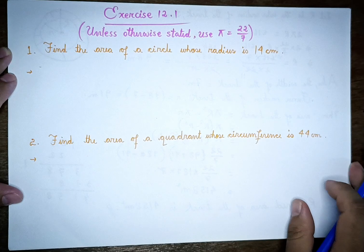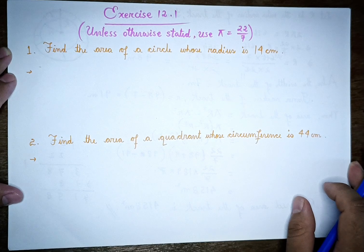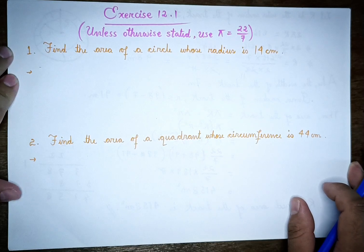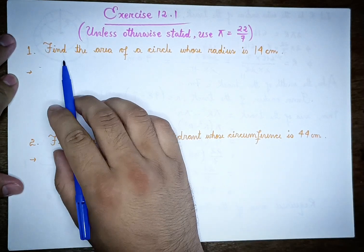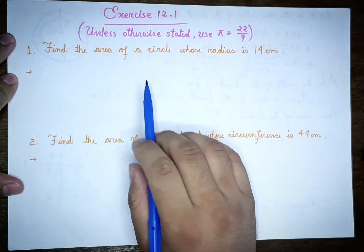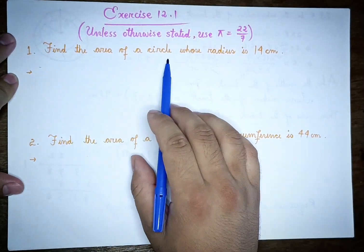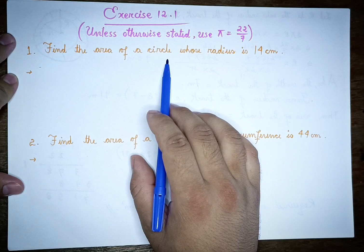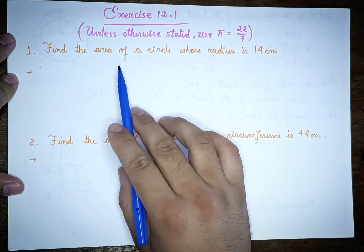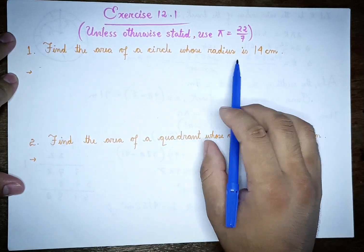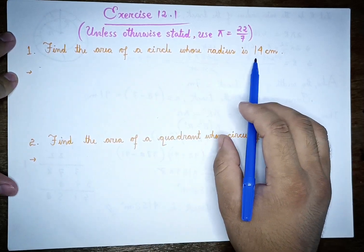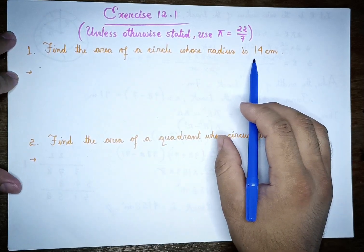How are you? Hello, I'm going to ask you about question 12.1. Question 1 says find the area of a circle whose radius is 14 cm.